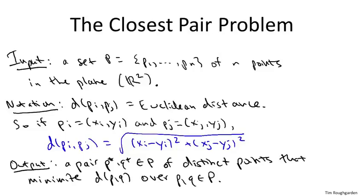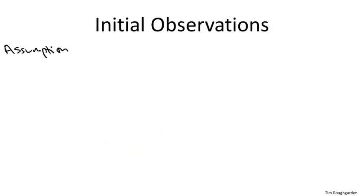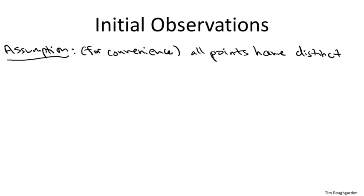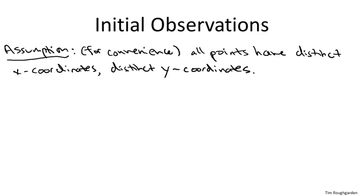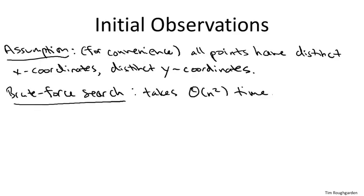Let's make some preliminary observations. First, I want to make an assumption purely for convenience: there are no ties. I'm going to assume all endpoints have distinct x-coordinates and also all endpoints have distinct y-coordinates. It's not difficult to extend the algorithm to accommodate ties. If we're comfortable with a quadratic time algorithm, this is not a hard problem — we can simply solve it by brute force search, setting up a double for loop iterating over all distinct pairs of points, computing the distance for each, and remembering the smallest. That's clearly correct but has running time theta of n squared.